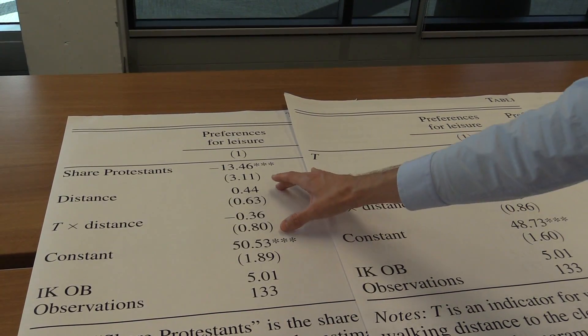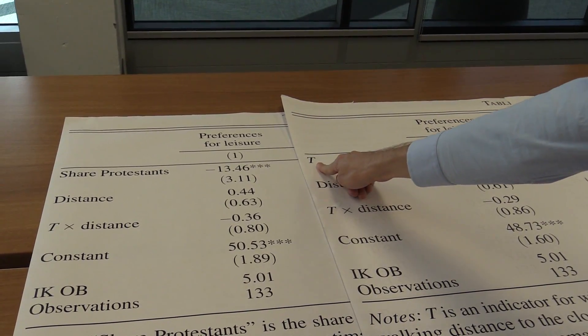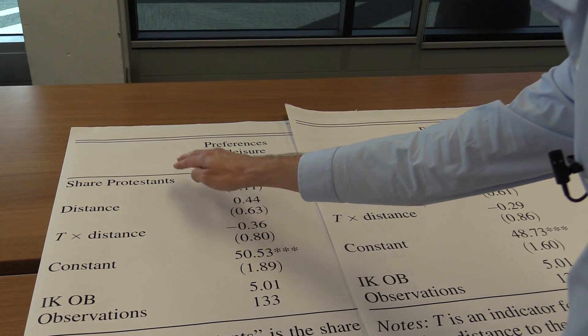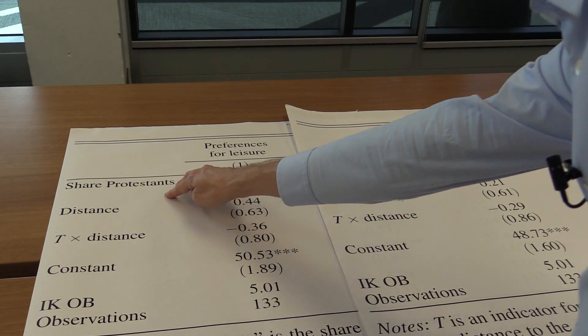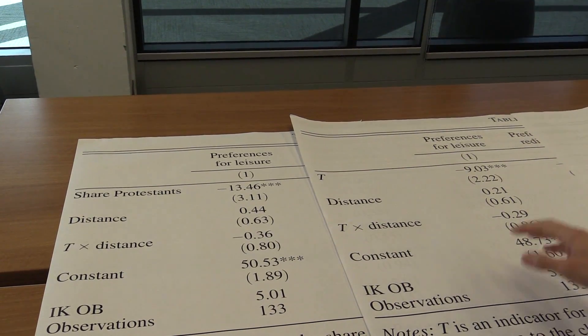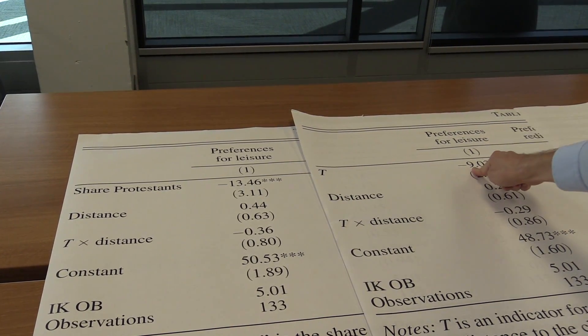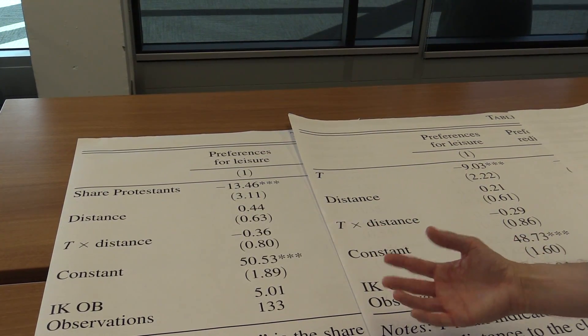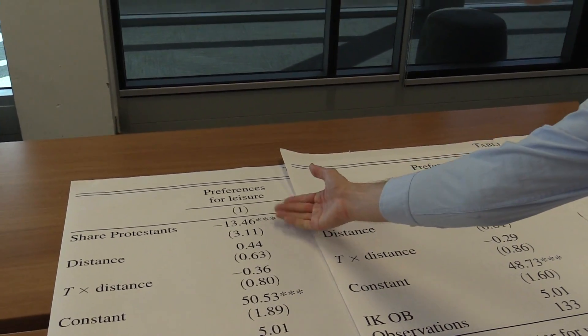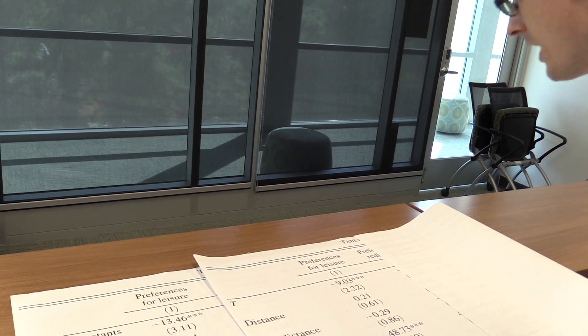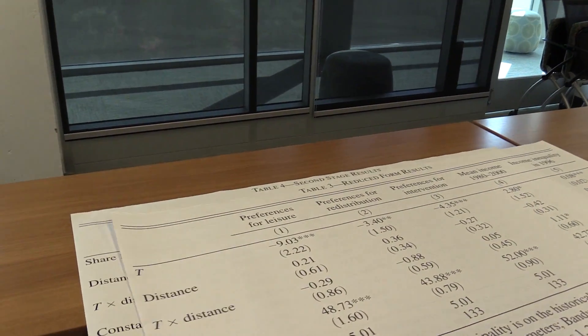So now we have the same variables as controls, and now instead of labeling T here, which was which side of the border you were on, they're going to label the variable the share of Protestants. So now we're looking at the actual causal effect of Protestant on preference for leisure, as opposed to just the causal effect of which side of the border you were on. So the main finding is that the effect increases. It goes from minus 9 down to minus 13. So actually, once we adjust for the non-compliance problem, because we've got a fuzzy RDD, our estimate of the causal effect gets larger. So relative to Catholics, Protestants have an even stronger preference against leisure.